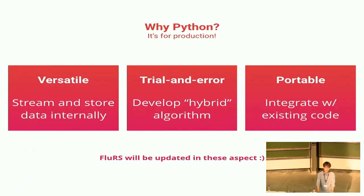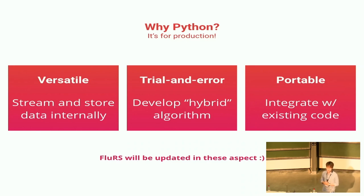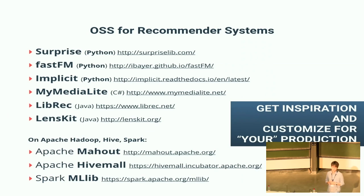That's why I implemented the package in Python. To handle huge amounts of streamed data, you probably need streaming infrastructure using something like Spark Streaming or Amazon Kinesis. Python and these middleware components have a great combination. Also, to improve the algorithm itself, you want to iterate through trial-and-error repeatedly, and Python makes that easy. Python is also portable, so integrating with production code is relatively easy. My package will be updated based on these aspects. There are also numerous other open source software projects for recommender systems that you can get inspiration from and customize.